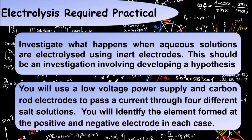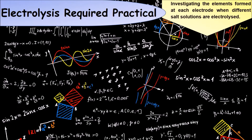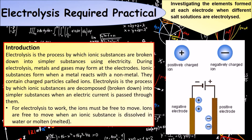You will use a low voltage power supply and a carbon rod anode to pass through four different salt solutions and identify the element formed at the positive and the negative electrode in each case. As a bit of an introduction: electrolysis is the process by which ionic substances are broken down into simpler substances using electricity.